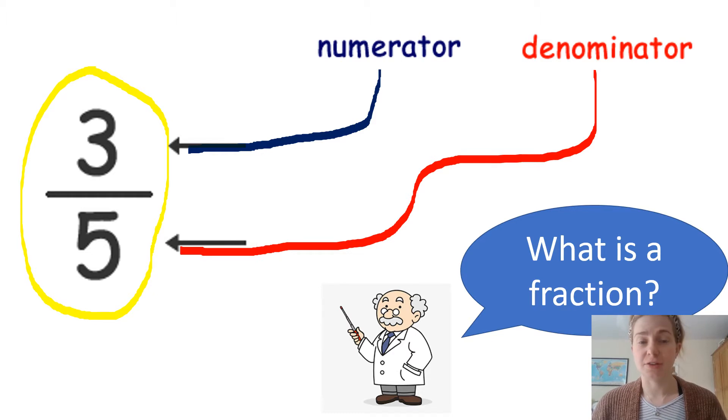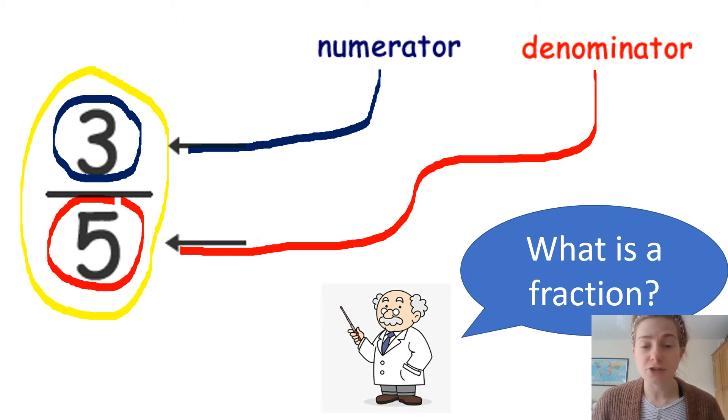So, we read this fraction as 3 fifths, 3 fifths, not 3 fives, 3 fifths. Our numerator, the 3, this tells us the number of parts we have. And our denominator, the 5, this tells us the total number of parts.